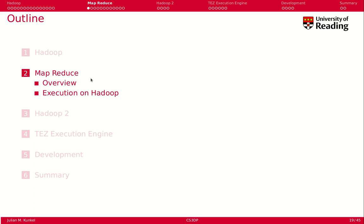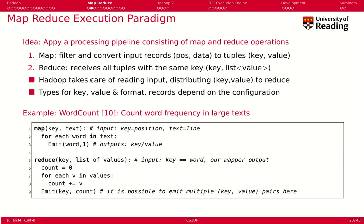We are talking about MapReduce and how that integrates into Hadoop. We have to understand the execution paradigm of MapReduce. The basic idea of MapReduce is to apply a processing pipeline consisting of two operations, Map and Reduce. Map basically filters and converts input records to tuples, and Reduce receives all these tuples with the same key.